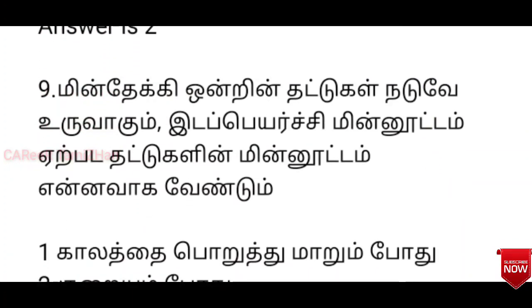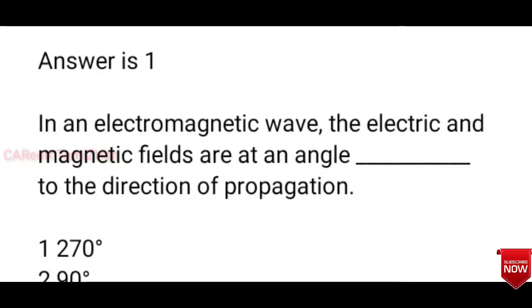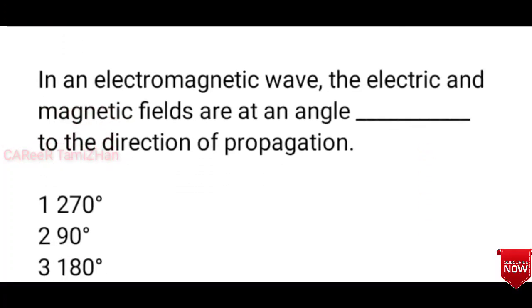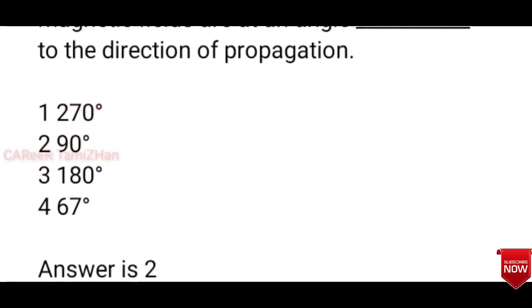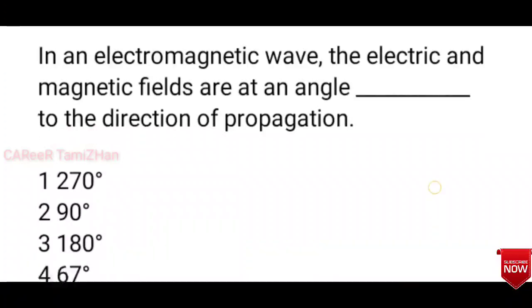In an electromagnetic wave, the electric and magnetic fields are at an angle to the direction of propagation. Options: 270 degrees, 90 degrees, 180 degrees, 670 degrees. The answer is 90 degrees. The electric and magnetic fields are perpendicular — at 90 degrees to each other.